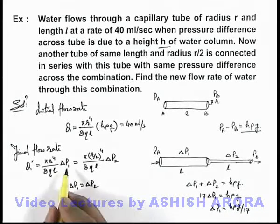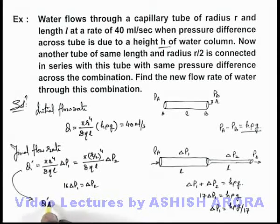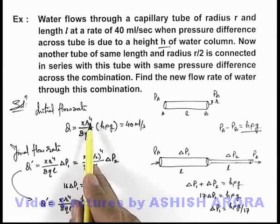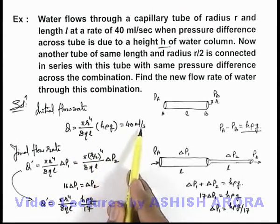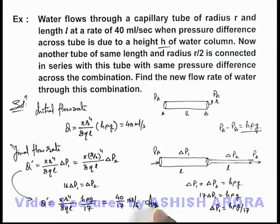If we substitute this ΔP₁, we will be getting the new flow rate Q', which can be written as π r⁴ / (8η l) multiplied by h ρ g / 17. So π r⁴ / (8η l) times h ρ g was given as 40 ml per second, so numerically we are getting 40/17 ml per second. That will be the answer to this problem.